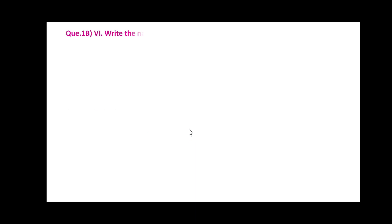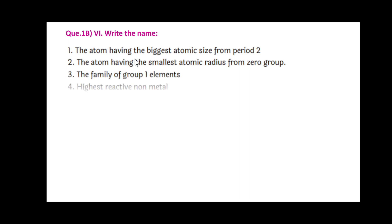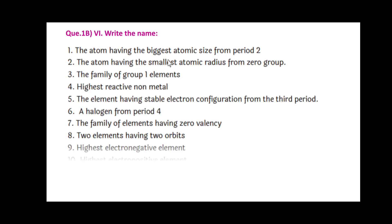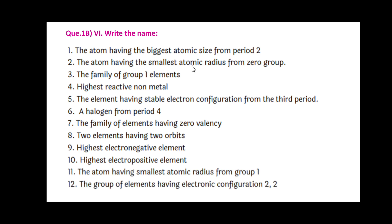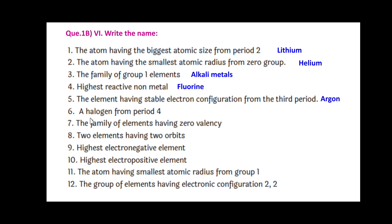Now question number 1B — the next variety of question is 'write the names.' The atom having the biggest atomic size from period 2 is lithium. The atom having the smallest atomic radius from zero group is helium. The family of group 1 elements are alkali metals. The highest reactive non-metal is fluorine. The element having stable electron configuration from the third period is argon. A halogen from period 4 is bromine.